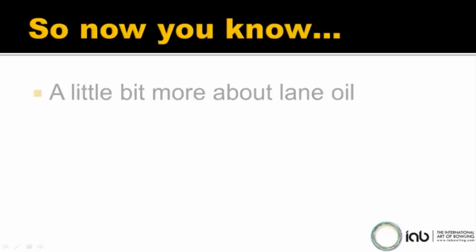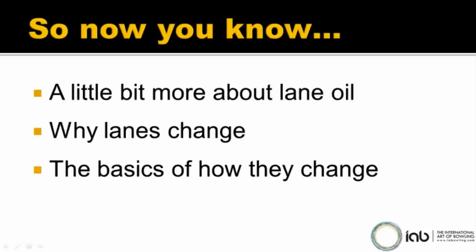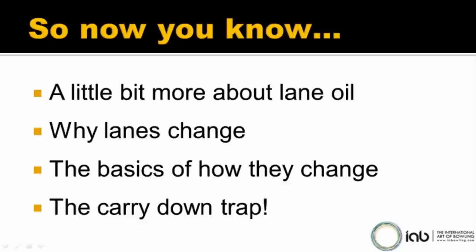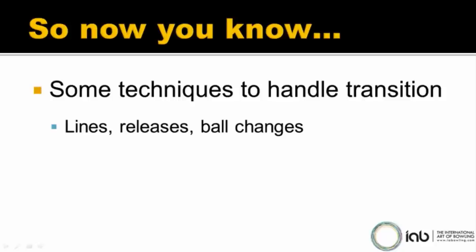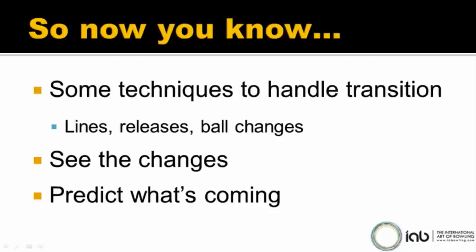So now you know. You know a little bit more about lane oil. You now understand more about why lanes change, and the basics of how they change — because oil is moved and removed. You've also been made aware of the carry-down trap: what you see as carry-down may actually be oil being removed off the lane. You now know some techniques to handle transition: you can change lines, you can change releases, and you can make ball changes. You can see the changes as they occur, and once you've seen enough changes, you start to remember how they happen — which means you can start to predict what's coming.